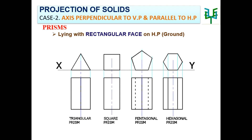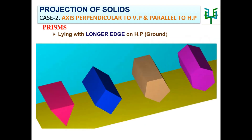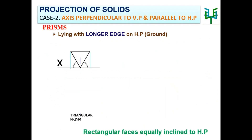A prism may also lay on the ground with its longer edge. The elevation should be drawn by having a base corner on the XY line. While one corner is on HP, two rectangular faces may make equal angles with HP — that is, two sides of the polygon are equally inclined to the XY line.